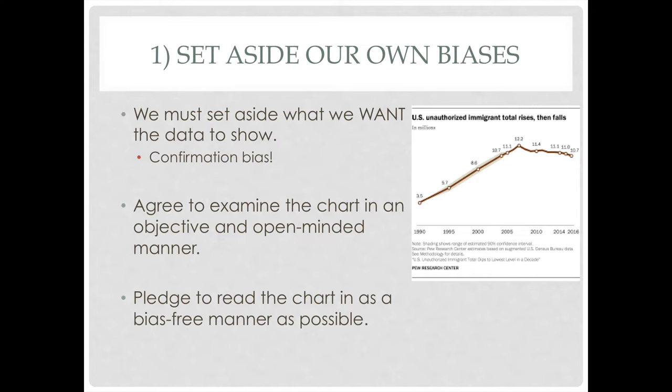Oftentimes in this world of hyper-partisanship, where people are very left or very right, very Republican or very Democrat, it's like you can never see the other side of any aisle. People are reading into graphs what's called confirmation bias — basically staking out a position and then finding a graph and saying, 'hey, this graph shows that I'm right.' Sometimes charts will support what we've already been thinking, but sometimes they'll show something else. So we have to set aside those biases, agree to examine the chart in an open-minded manner, and pledge to read it in the most bias-free manner we can muster.